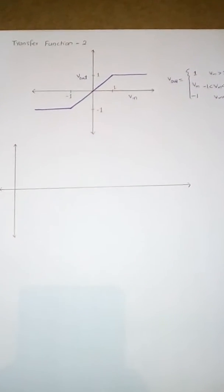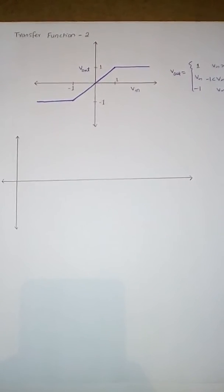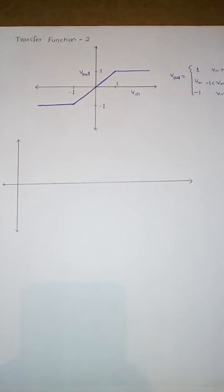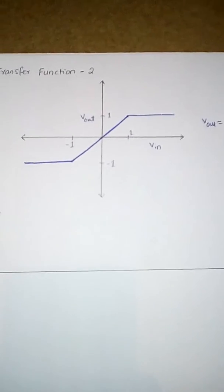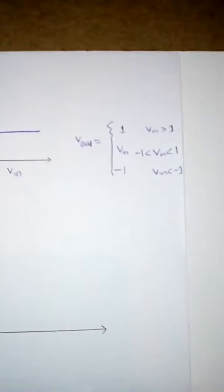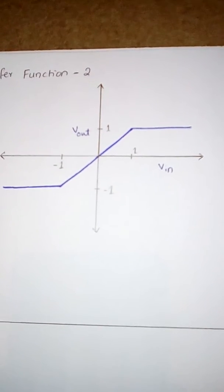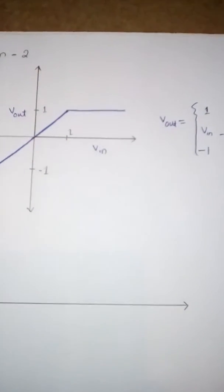Hello guys, in this video I'm going to teach you how to draw a clipper circuit — basically how to draw a clipper circuit from a given transfer function. As you can see, I've been given a transfer function. The y-axis represents Vout and the x-axis represents Vin, the input voltage and the output voltage.